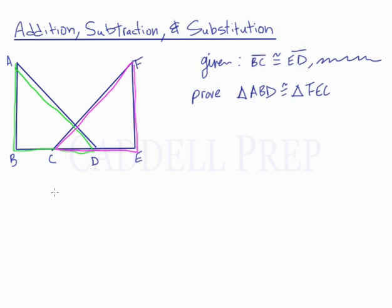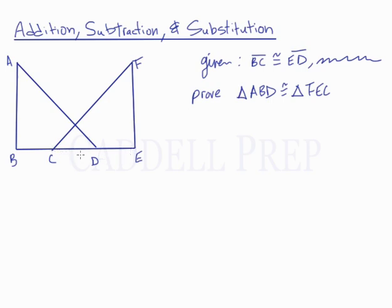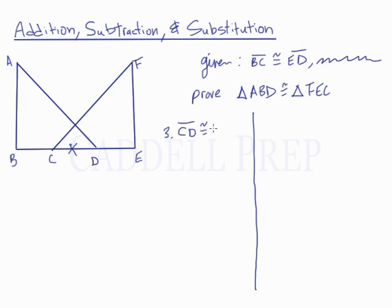We're going to have to do a few steps. First, you should notice that in side BD we have CD, and in side EC we have CD as well — there's an overlap. We know that CD is congruent to DC because of the reflexive property. So in our Statements and Reasons, at step 3, we write that CD is congruent to DC, and the reason is the reflexive property.